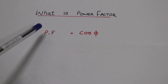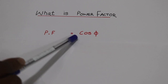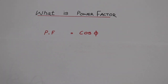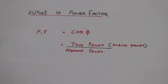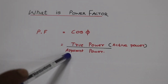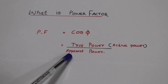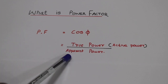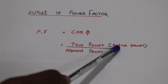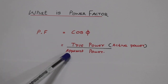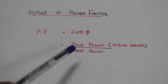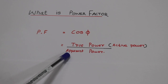How do you remember the power factor? You may know power factor as cos(φ) — the cosine of the phase angle. Another way to define it: power factor equals true power divided by apparent power, also called active power divided by apparent power.